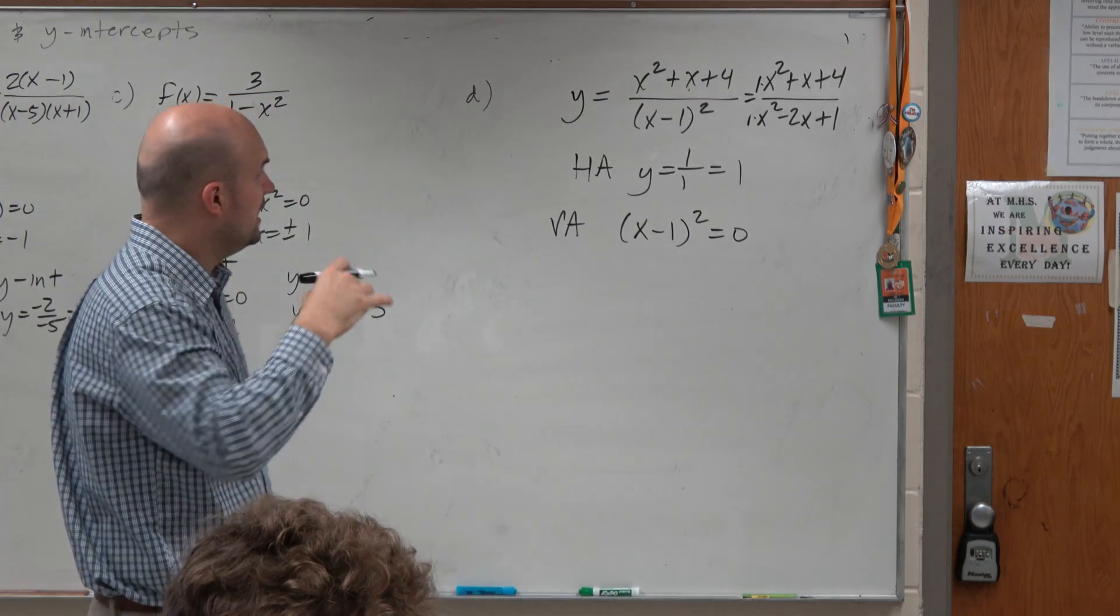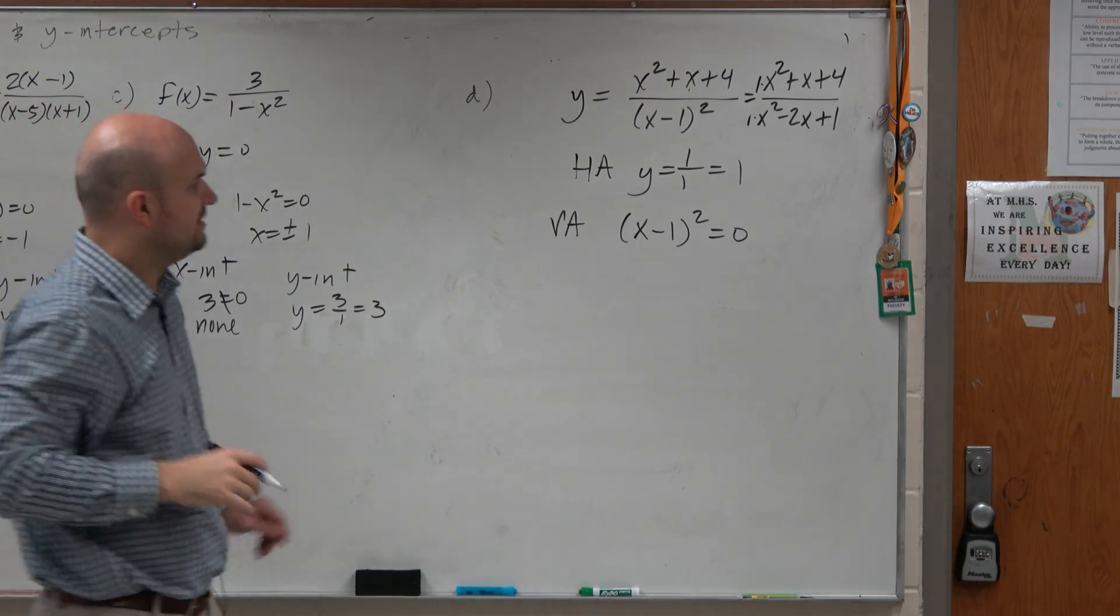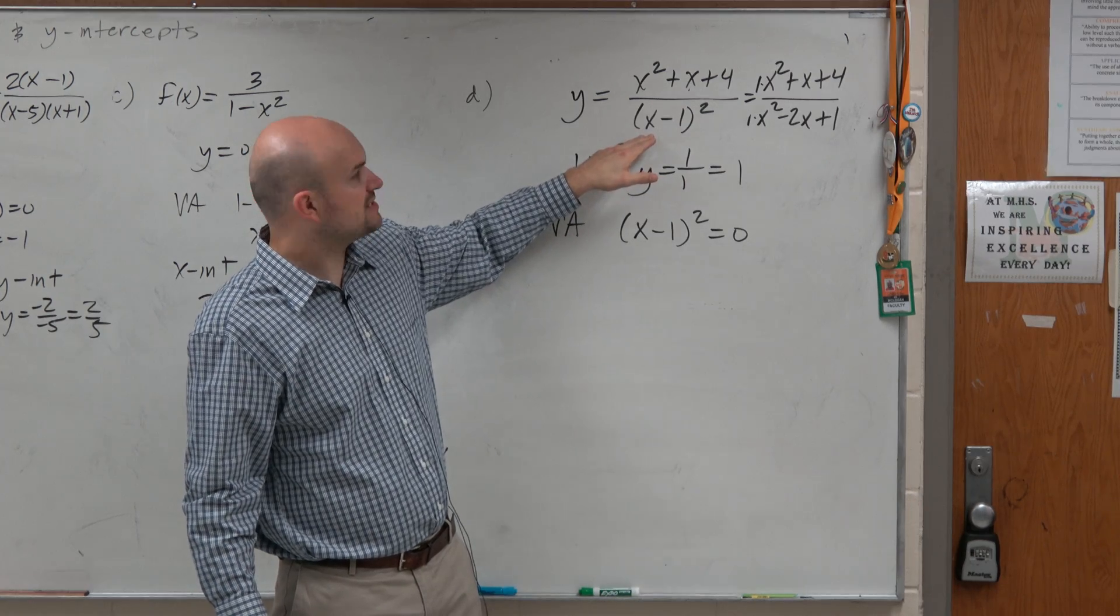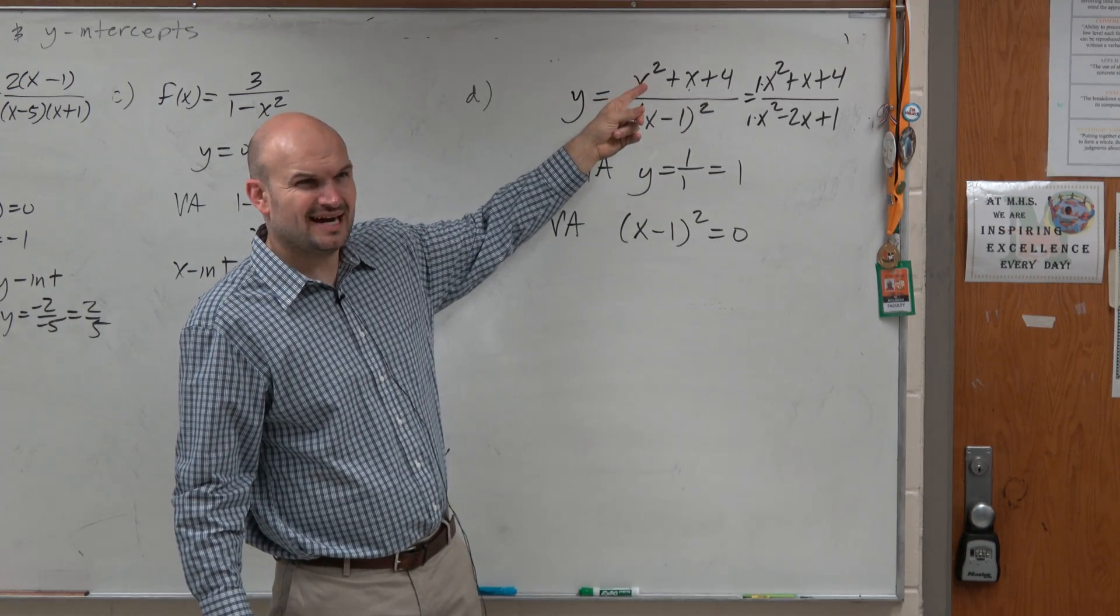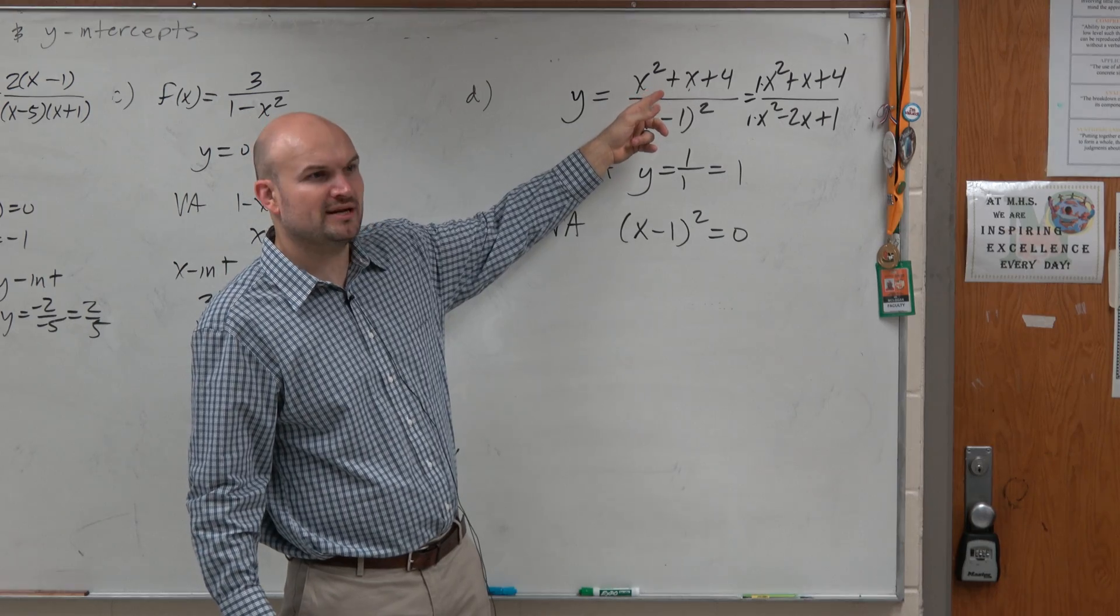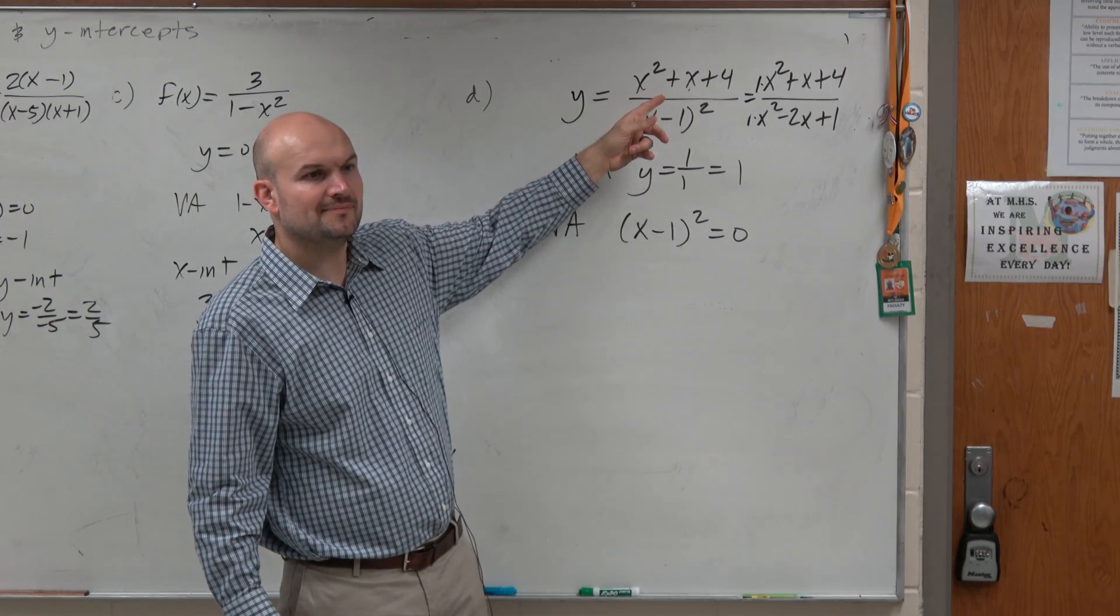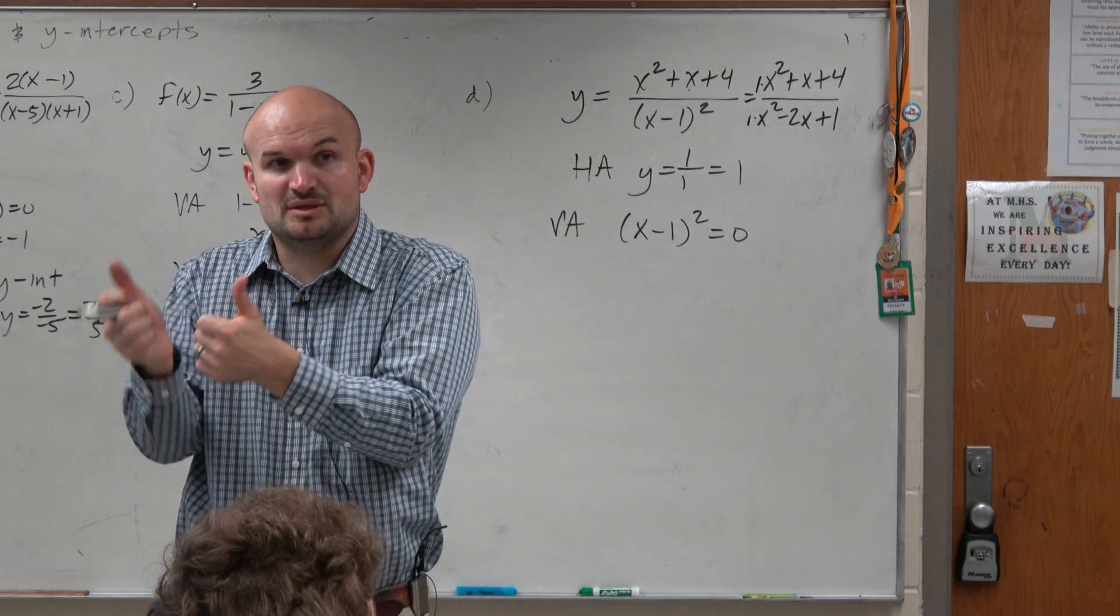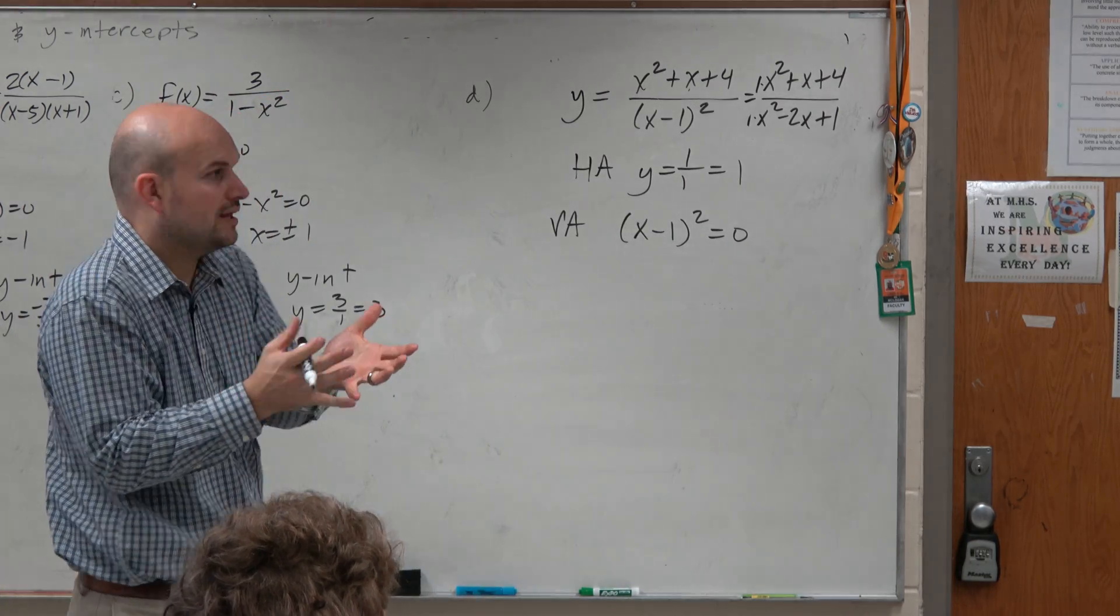But this is factorable to (x - 1) times (x - 1). But then I look over here, and I see I can't factor this, actually. There's not two numbers that multiply to give me 4, that add to give me 1, right? So before I even get to that point, I just know there's nothing that's going to divide out. So I'm at least good there. So it's not a hole. I have asymptotes.